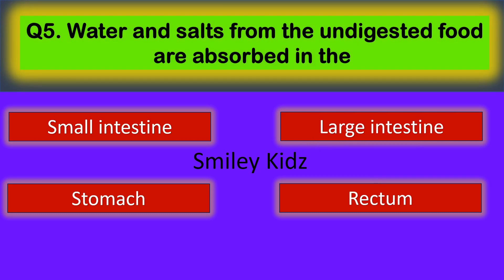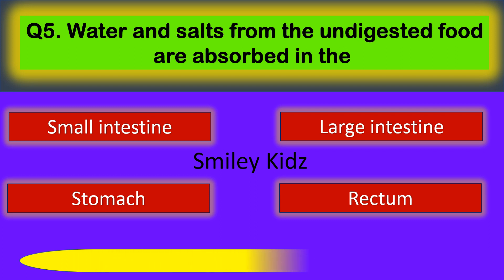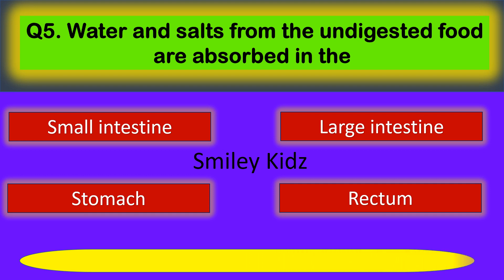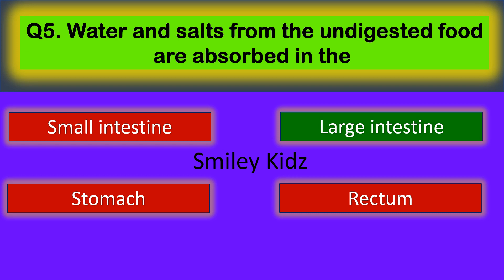Question number five: water and salts from the undigested food are absorbed in the — your options are: small intestine, large intestine, stomach, and rectum. The correct answer is large intestine. Water and salts from the undigested food are absorbed in the large intestine.